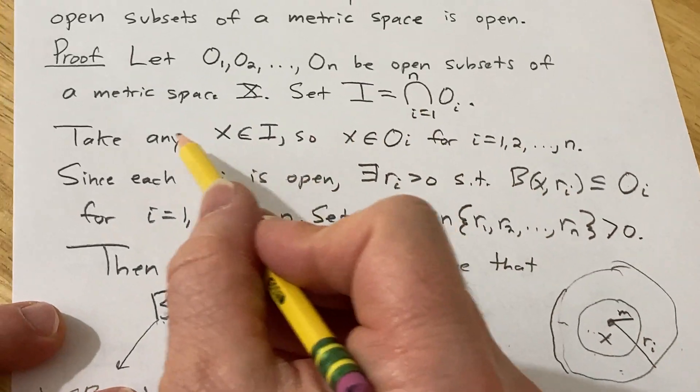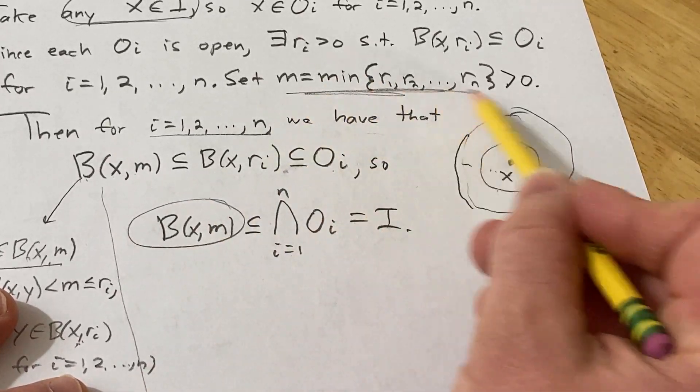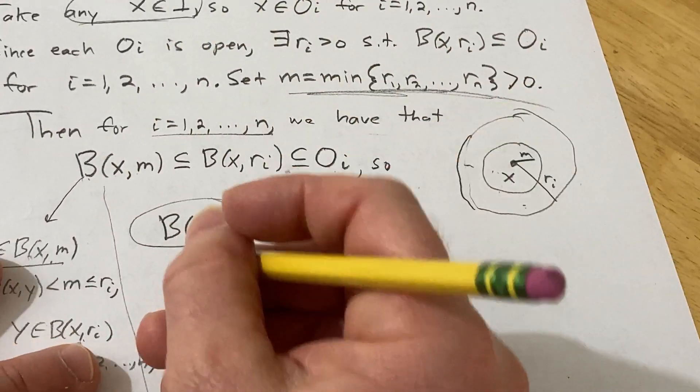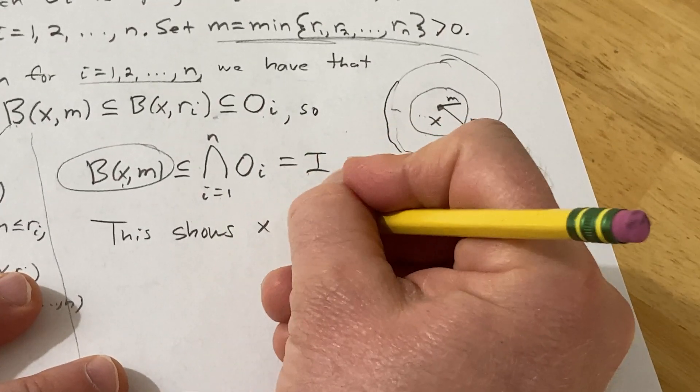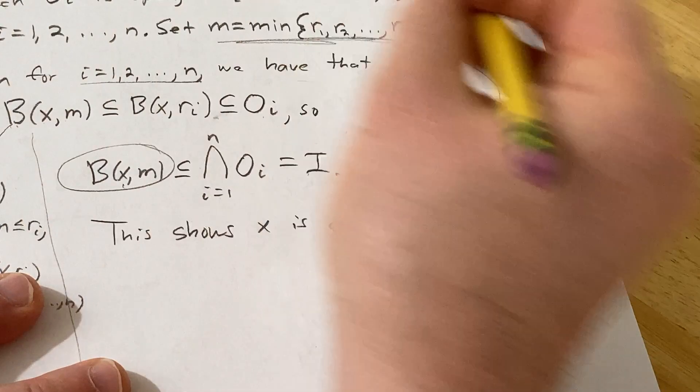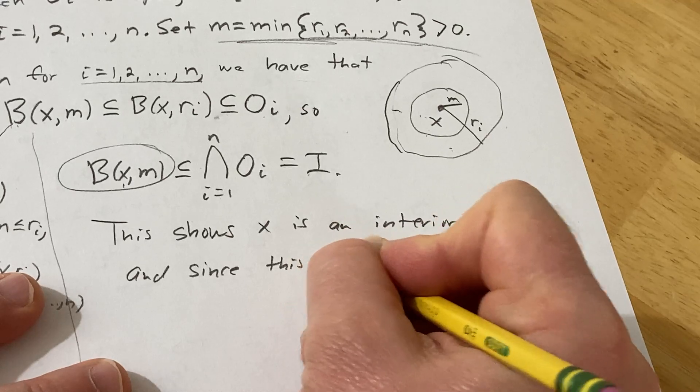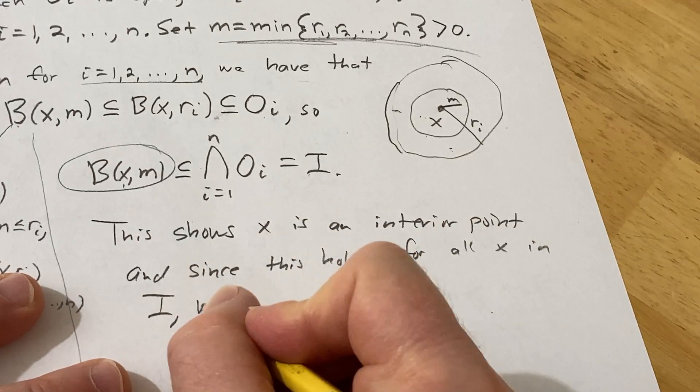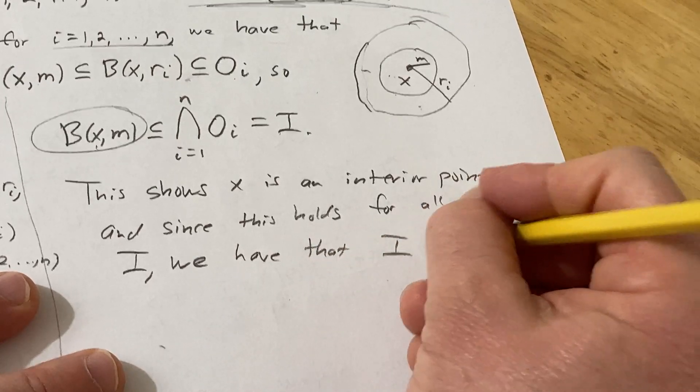So we started with an element x in I, and we found an open ball of positive radius such that that open ball is contained in I. Therefore, x is an interior point. This shows x is an interior point. And since this holds for all x in I, we have that I is open.